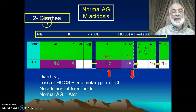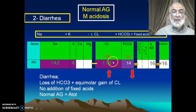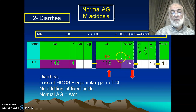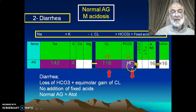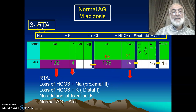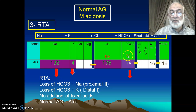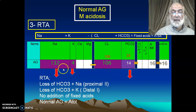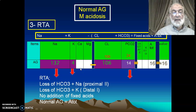When we come to diarrhea, there is loss of bicarbonate — instead of 24, it comes to 14. At the same time, there is retention of chloride. The difference between sodium and chloride plus bicarbonate stays at 130, so in diarrhea there is hyperchloremic metabolic acidosis with normal anion gap. Similarly, renal tubular acidosis involves equimolar loss of cation with bicarbonate, giving normal anion gap metabolic acidosis.